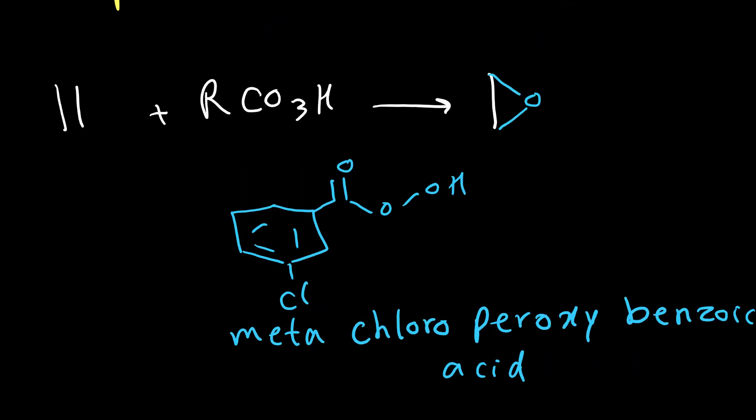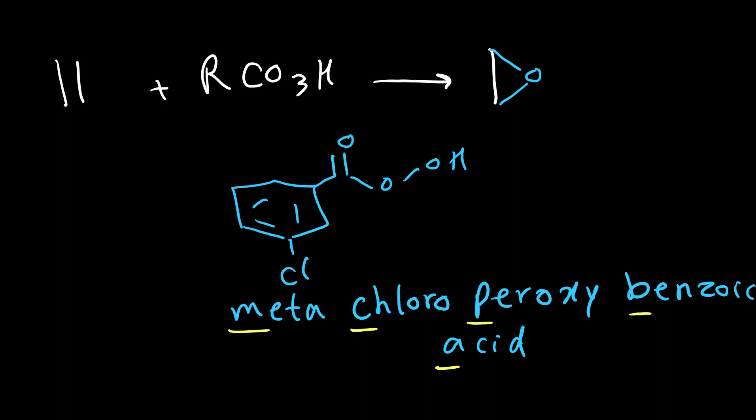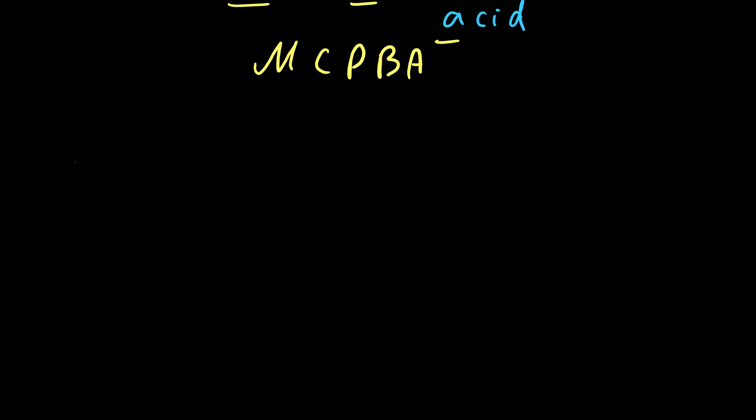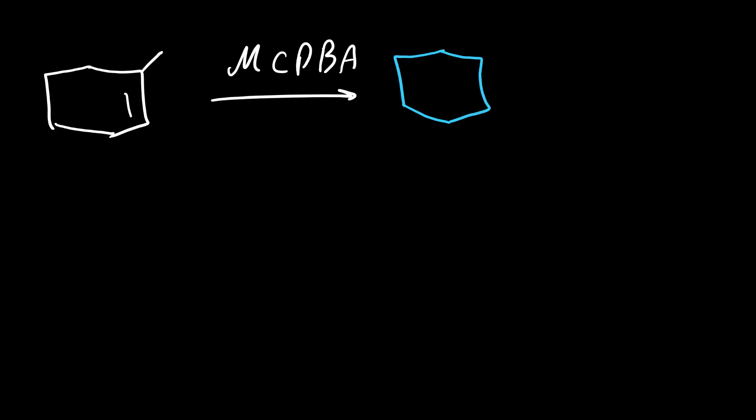Or we just use the first letter for each word and call it MCPBA. Whenever we see MCPBA it means we have a peroxy acid. Here's an example: let's say we have this alkene and we react it with MCPBA. To write the answer we just need to convert this double bond to a single bond.